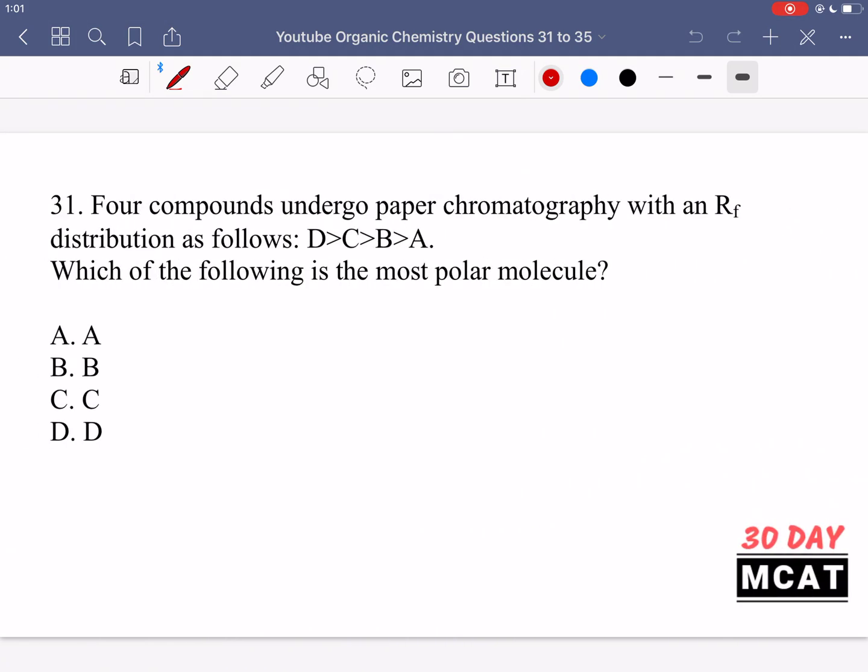Now let's go through the questions together. In question 31 it says four compounds undergo paper chromatography with an Rf distribution as follows: D is greater than C, which is greater than B, which is greater than A. Which of the following is the most polar molecule?